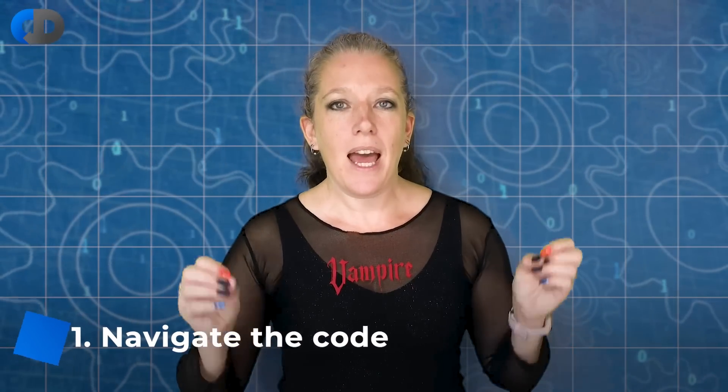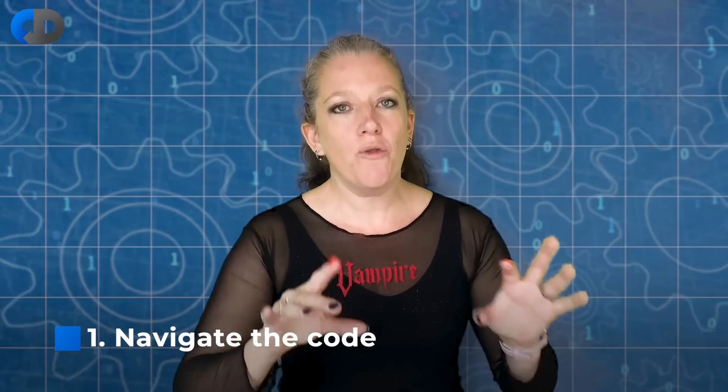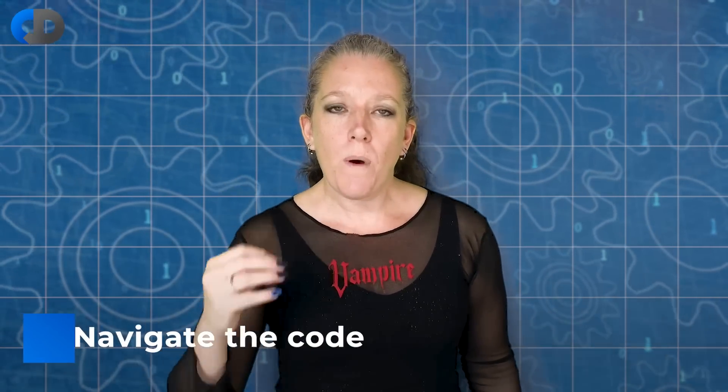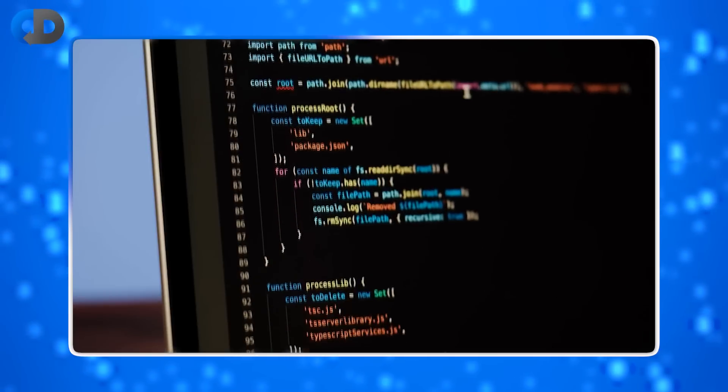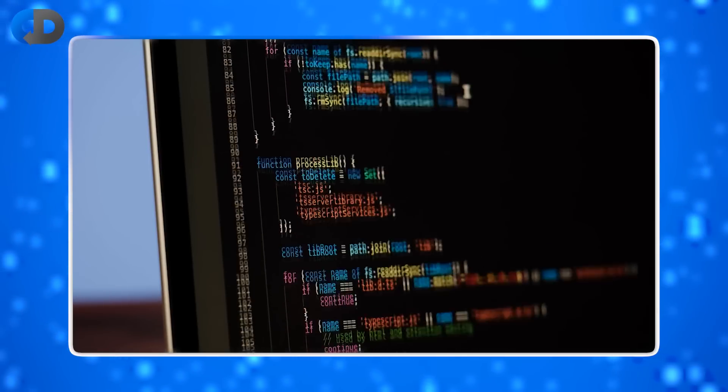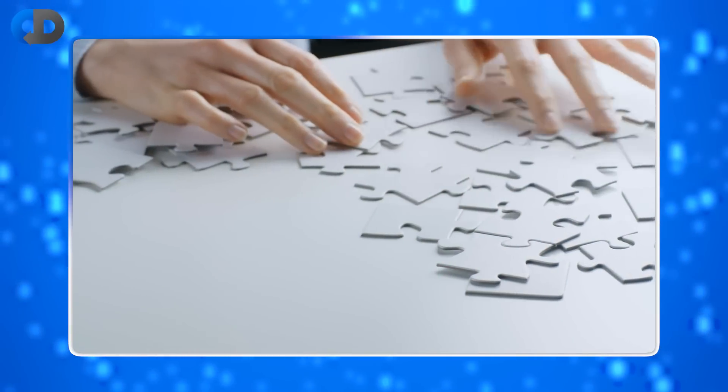My first tip. Navigate the code. Don't write the code. When we're trying to understand what code does, when we're trying to find the bug, when we're trying to identify where to put the new feature, we should be navigating around the code to have a look at what shape the code is, which bits of the code are calling which other bits of the code, and how it all fits together. I'm going to show you some tips in my IDE which help me to navigate through the code.